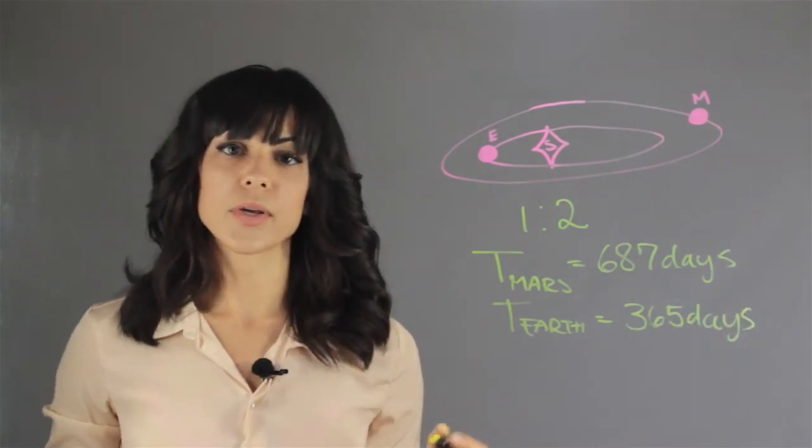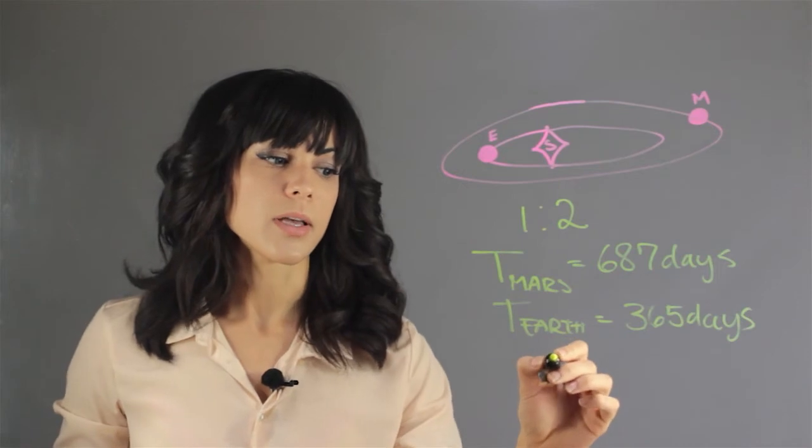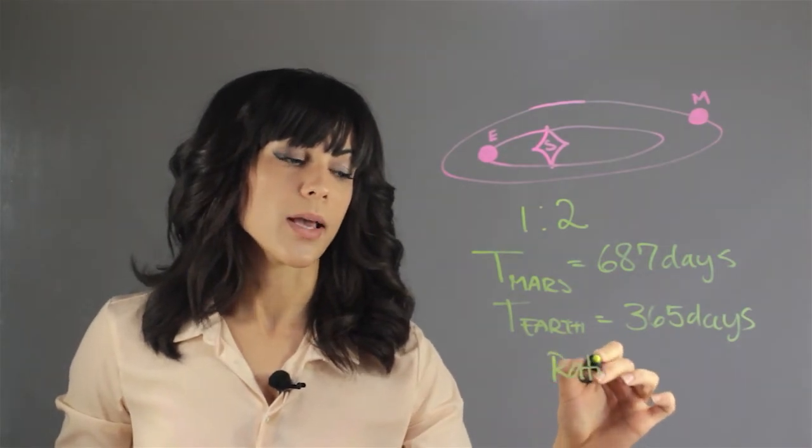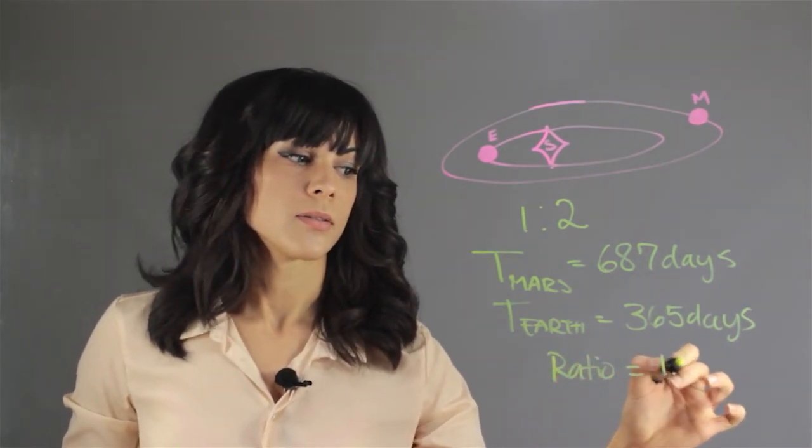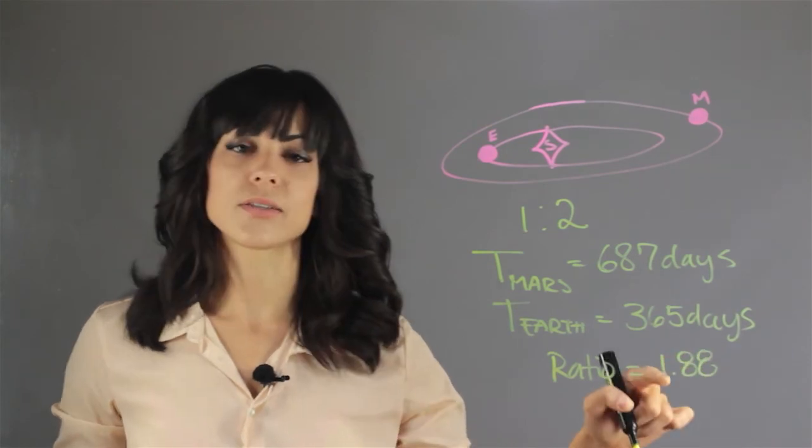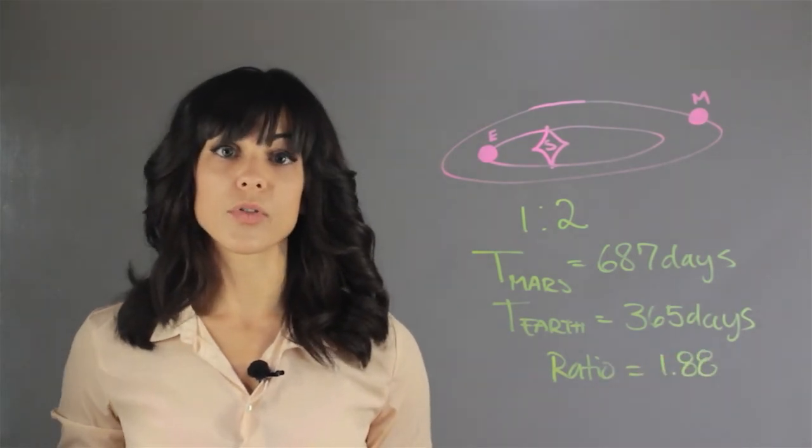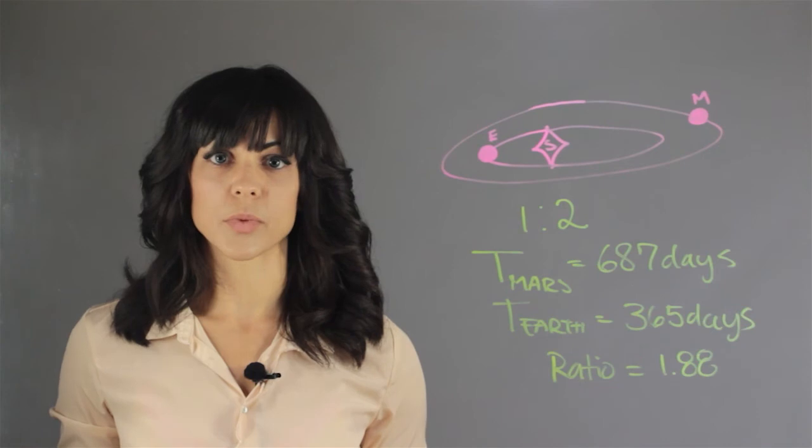If we find the ratio between their orbits, we see that the ratio is 1.88, meaning that it's not a whole number, therefore Earth and Mars are not in an orbital resonance with the Earth.